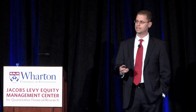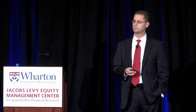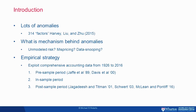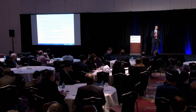Broadly speaking, we can think of three explanations: two based on model misspecification — unmodeled risk or mispricing — and a slightly more nefarious explanation based on data snooping. Our empirical strategy exploits a new comprehensive database of accounting information for publicly traded U.S. firms going back to 1918.